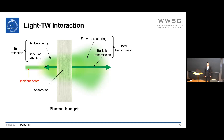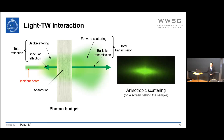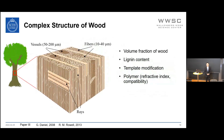The transmitted photons also show an anisotropic scattering pattern on the screen behind the sample, making the light–transparent wood interaction a complicated process. The main reason is the complex structure of wood, including aligned fibers and vessels along the tree growth direction, and wood rays perpendicular to the fiber direction.